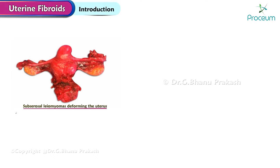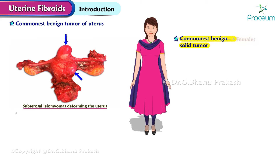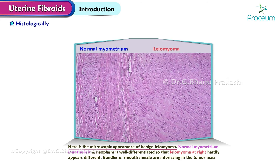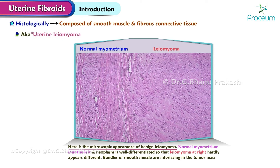Uterine fibroids. Introduction. Fibroid is the commonest benign tumor of the uterus and also the commonest benign solid tumor in females. These are more common in nulliparous women or those having one child, and in cases of infertility. The prevalence is highest between 35 to 45 years. Histologically, this tumor is composed of smooth muscle and fibrous connective tissue, so named uterine leiomyoma, myoma, or fibromyoma.